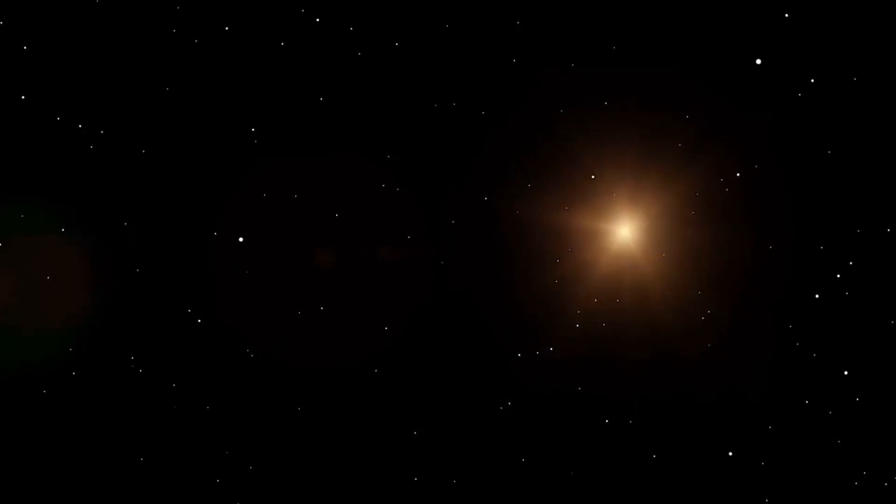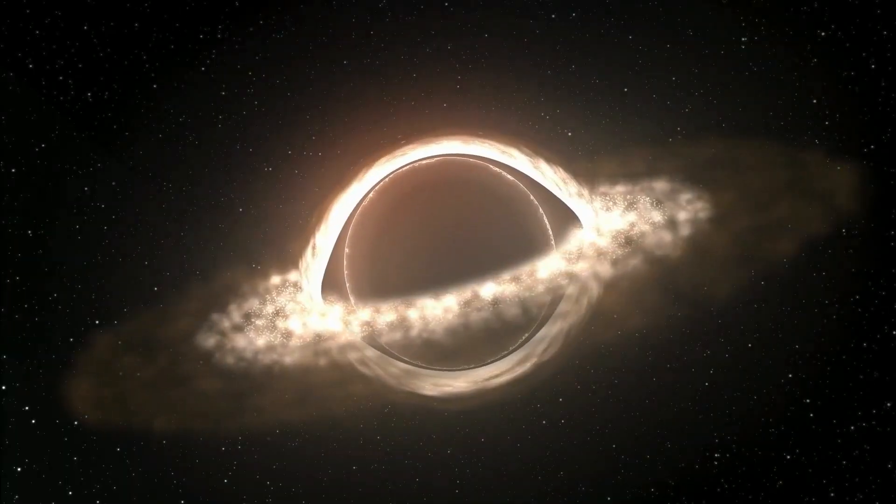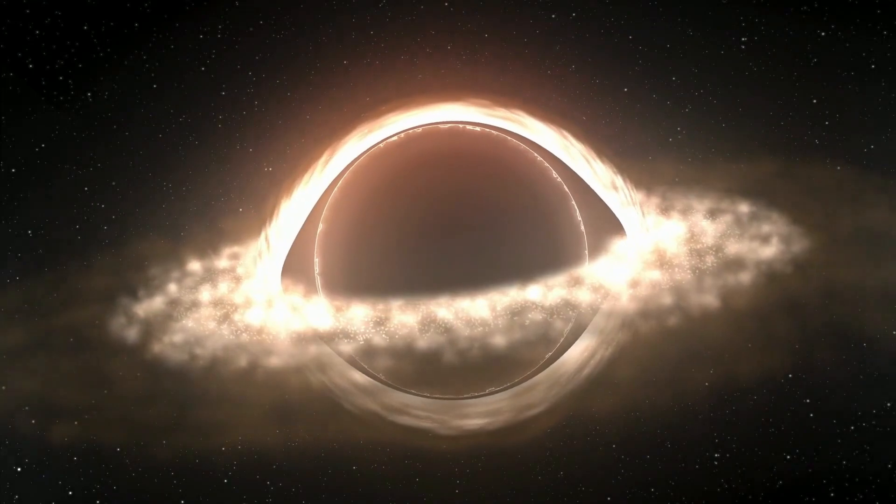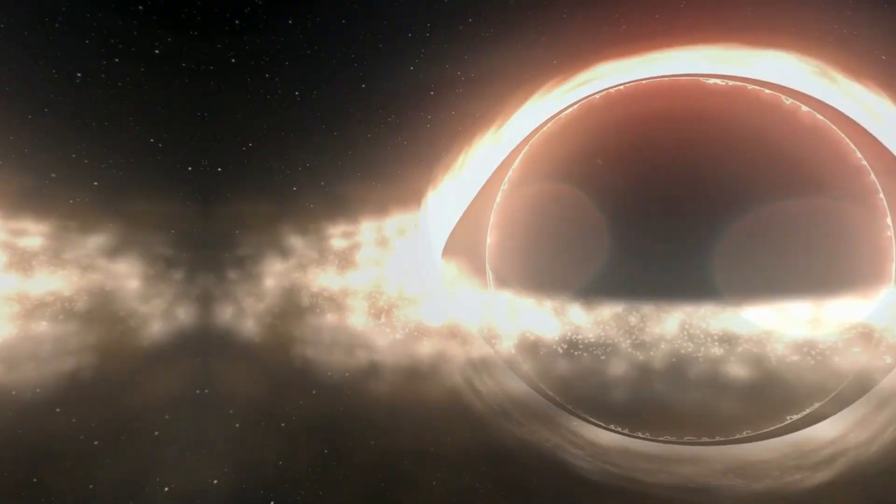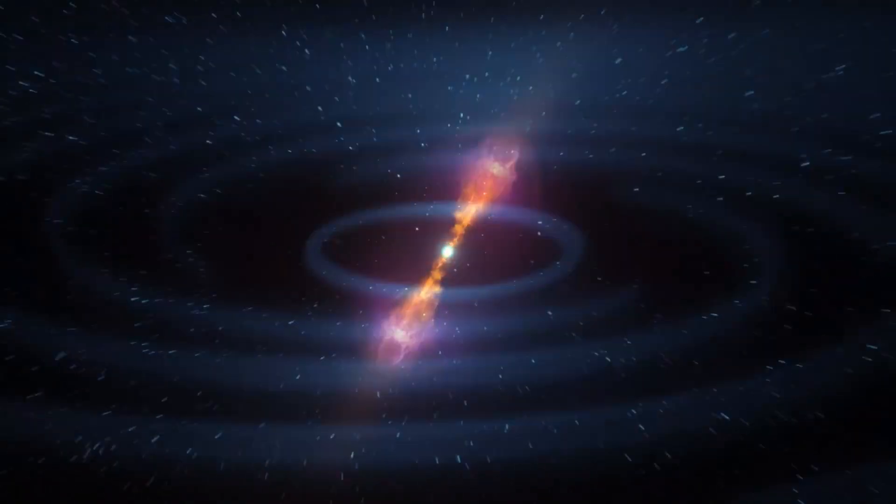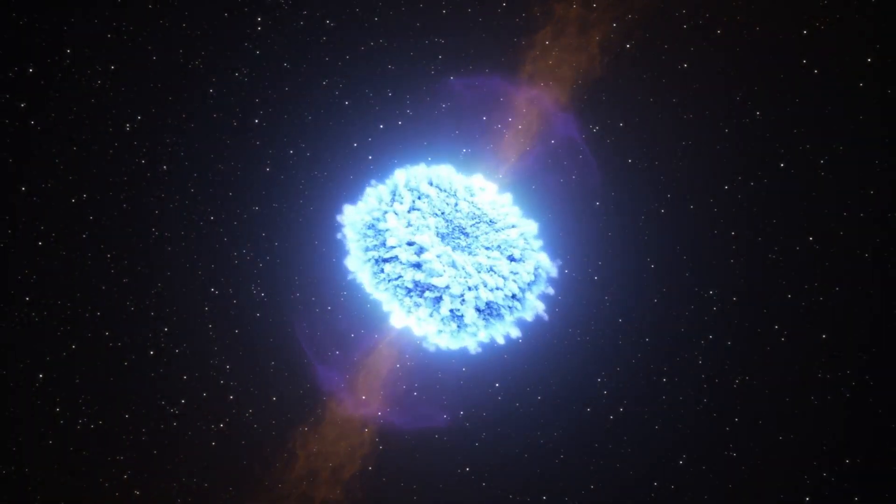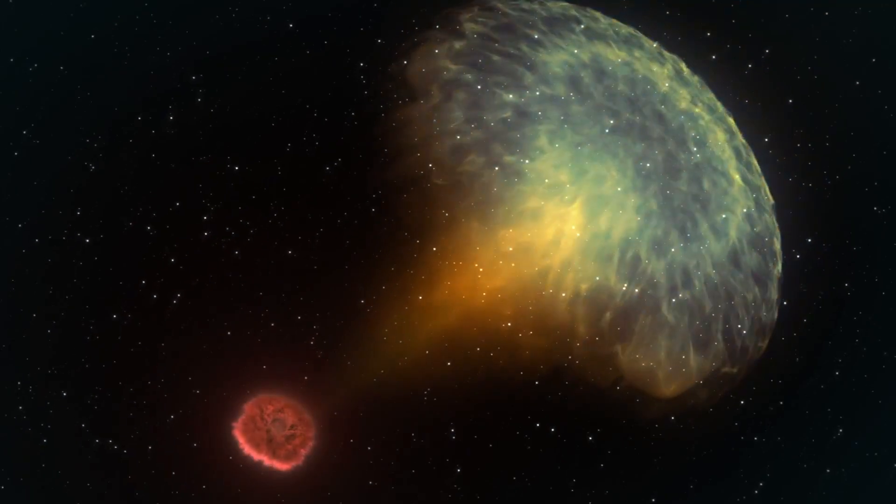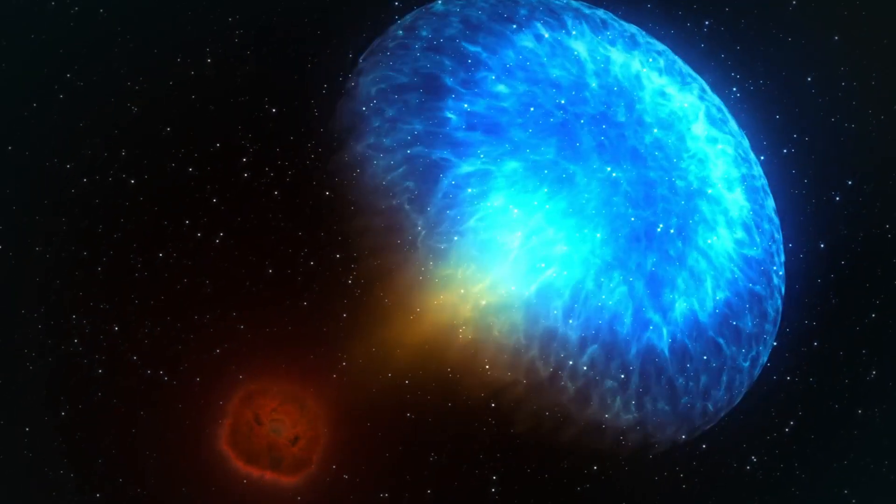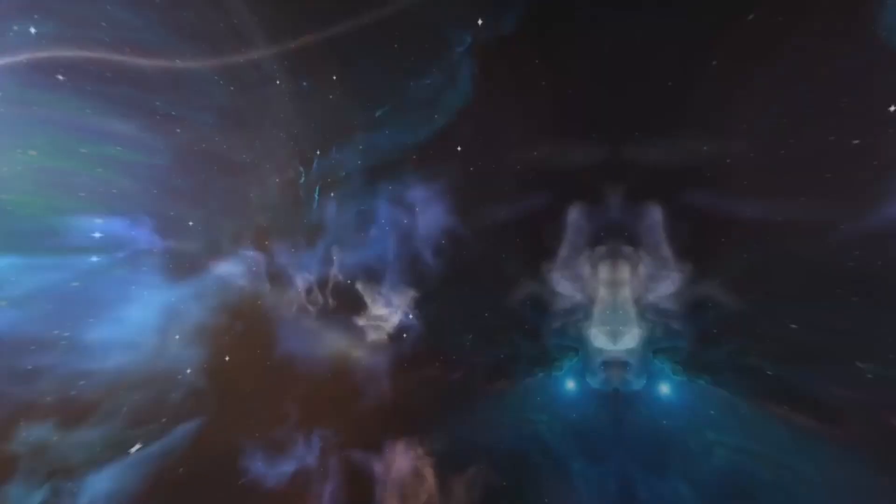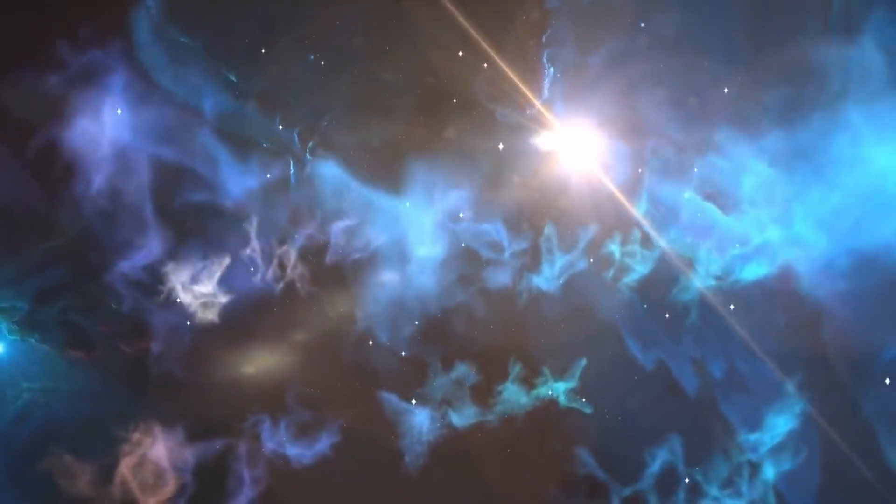As a Wolf-Rayet star burns hotter than when it was young, it produces enormous winds that propel vast quantities of gas into space. It is estimated that the star in this pair lost at least half of its original mass as a result. Additionally, as they approach the conclusion of their lives, black holes tend to form. At the boundary where the winds from both stars meet, carbon and other heavy elements are squeezed as they are pushed into space.